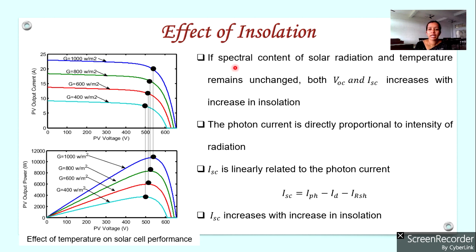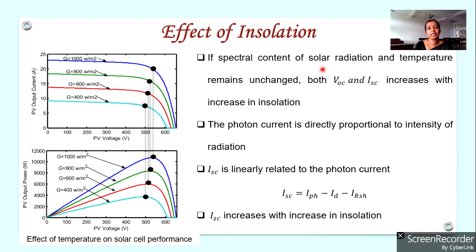Consider a solar cell and assume that its temperature remains constant and the spectral content of solar radiation also remains constant. The spectral content refers to which wavelength components are present in the solar radiation.